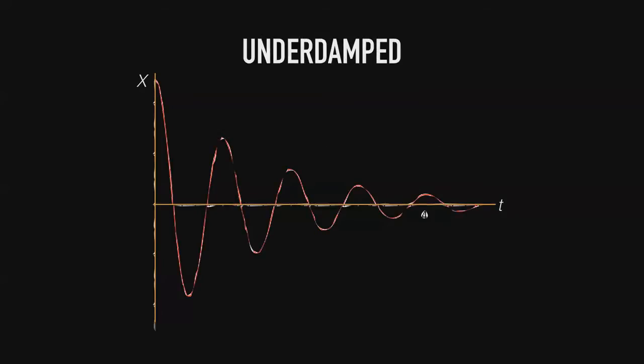The first type of damping we have is underdamped, where a system oscillates back and forward until it reaches its equilibrium. So let's use a door as an analogy. If we have a door and we're about to close the door and it swings back and forth until it closes, that would be an example of an underdamped system.